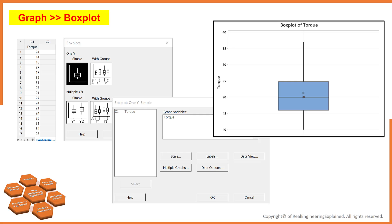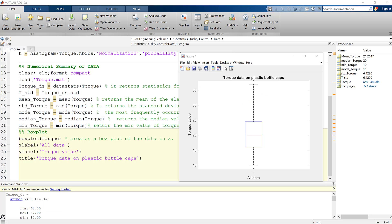In Minitab, go to Graph, select Box Plot, and then Simple. From Graph Variable, select torque, and hit OK. Here is the box plot in Minitab. In MATLAB, we can use boxplot function to draw the box plots. Run this part, and here is the box plot.